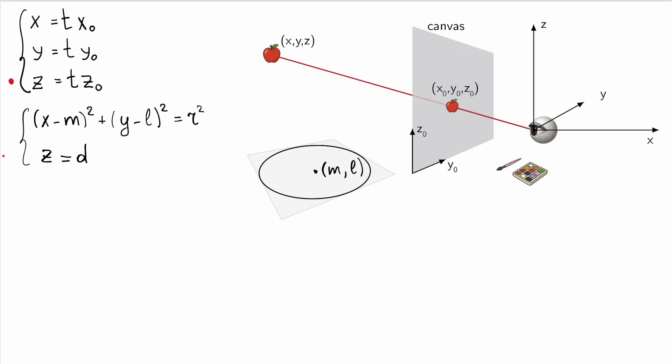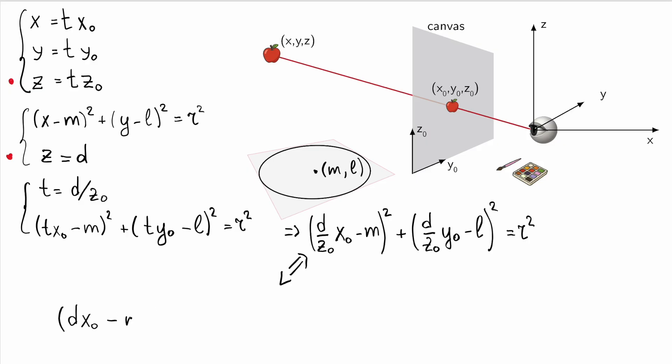From the last two equations, we get that T equals D over Z0. We then substitute the expressions for X and Y written in terms of canvas coordinates into the first equation along with T and this gives us the final equation for the projection of the circle onto the canvas plane.